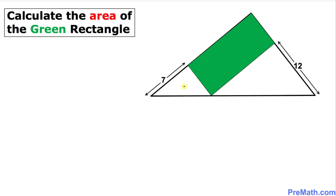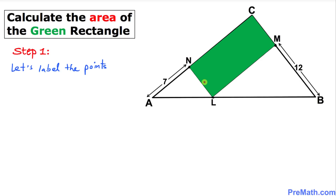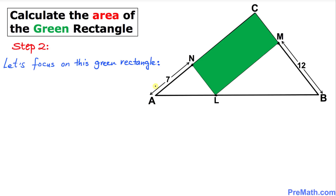Let's go ahead and get started with the solution. Here's the very first step: let's label the points. We want to take care of these vertices — this vertex I'm going to call A, this vertex B, this vertex C, and then this point I'm going to call L, this point M, and this point N. Here is our much nicer looking graph.